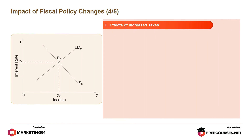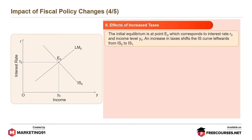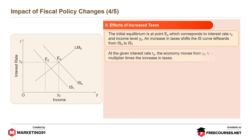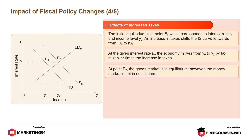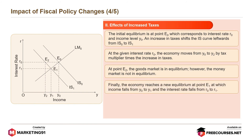To explain graphically, the initial equilibrium is at point E0, which corresponds to interest rate R0 and income level Y0. An increase in taxes shifts the IS curve leftwards from IS0 to IS1. At the given rate of interest R0, the economy moves from Y0 to Y2 by the tax multiplier times the increase in taxes. At point E2, the goods market is in equilibrium. However, the money market is not in equilibrium. Finally, the economy reaches a new equilibrium at point E1, at which income falls from Y0 to Y1 and the interest rate falls from R0 to R1.